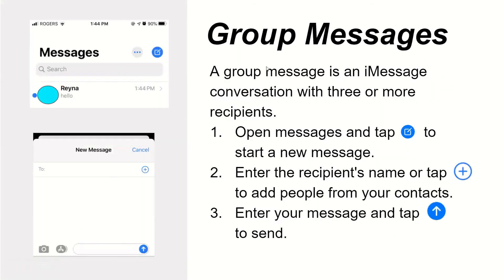Group messages. A group message is an iMessage conversation with three or more recipients. Open Messages and tap the compose icon to start a new message. Enter the recipient's name, or tap Add to add people from your contacts. Enter your message and tap the send icon to send.